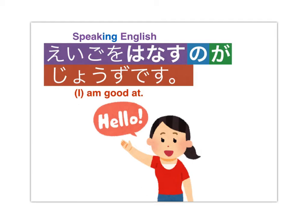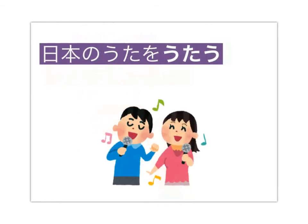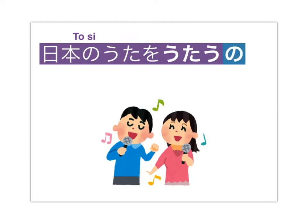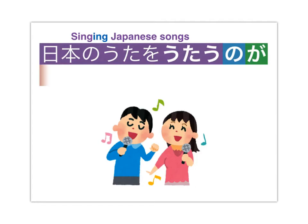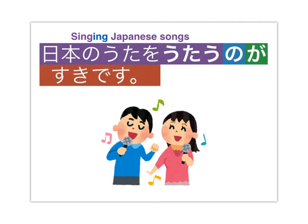Another example: Nihon no uta wo utau — to sing Japanese songs. Add no after the short version of the verb; that turns it into 'singing Japanese songs,' an activity. Add ga after no and then further elaborate: suki desu. Nihon no uta wo utau no ga suki desu: I like to sing Japanese songs.